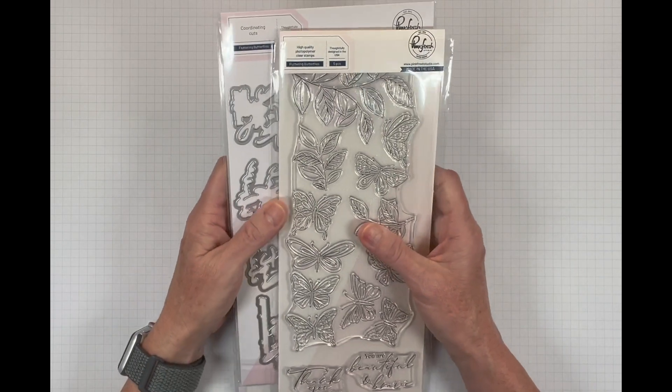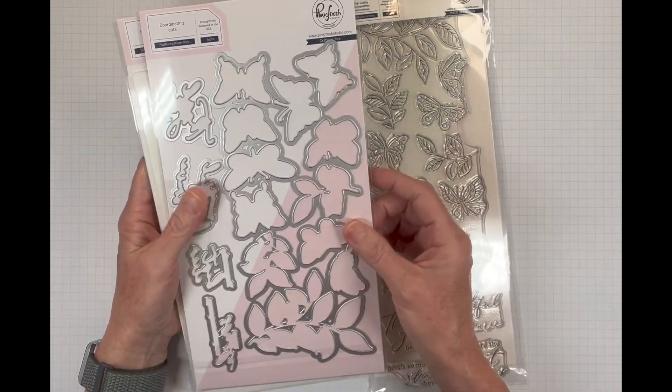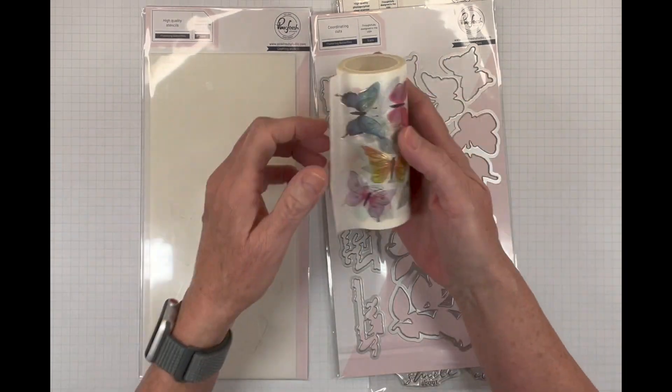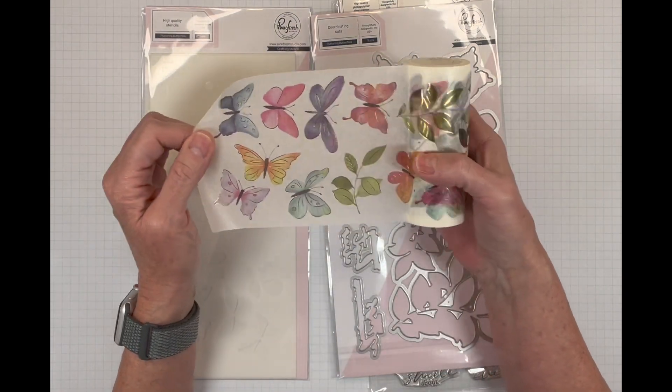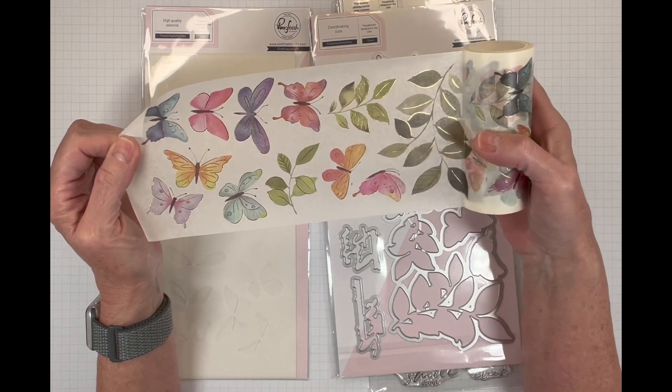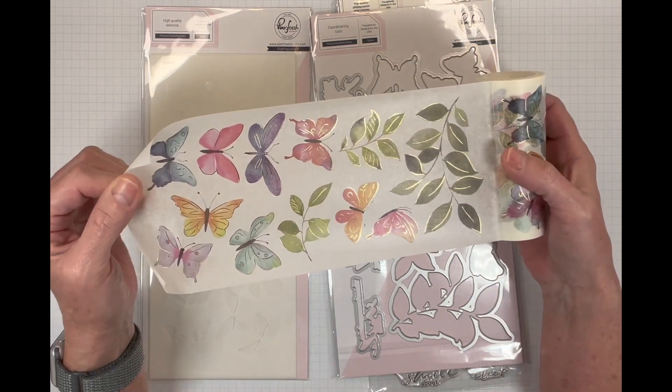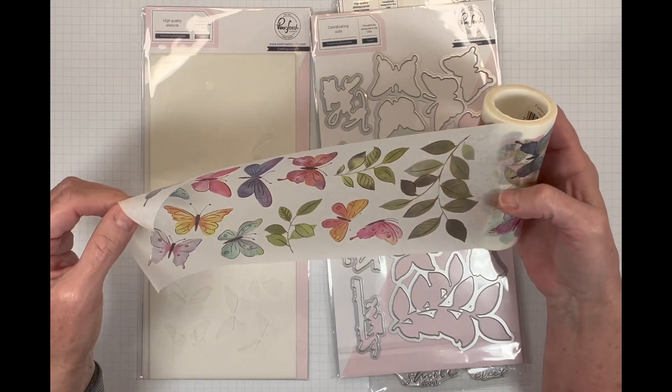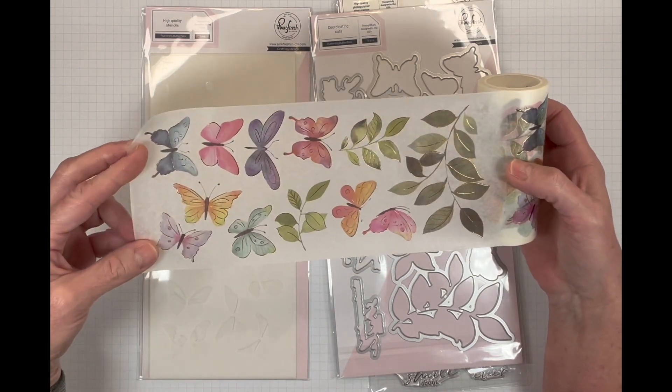So we will be using the Fluttering Butterflies. They have a stamp, the coordinating die, and the stencil, and the washi tape. So I've already got all my pieces die cut, but I just wanted to show you. These images have gold foiling on them, and they are so pretty. I love these butterflies.